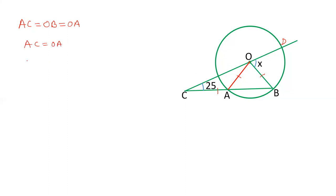So in triangle OAC, AC equals OA, and therefore angle AOC equals angle C. This angle equals angle C which is given as 25. So angle AOC equals 25.